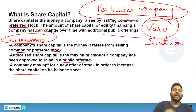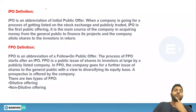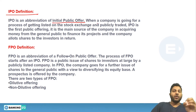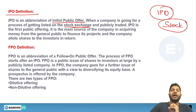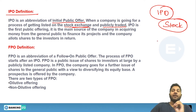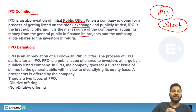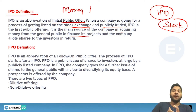IPO is an abbreviation of Initial Public Offer. When a company goes through the process of getting listed on the stock exchange — where shares can be bought or sold publicly — that is an IPO. It is the first public offering and is the main source for a company to acquire money from the general public to finance its projects.